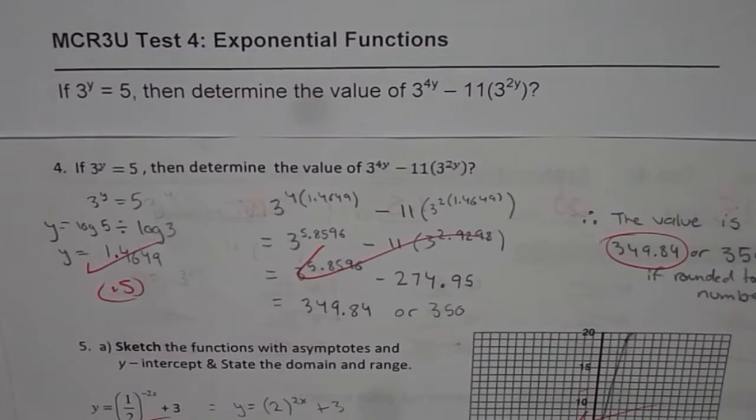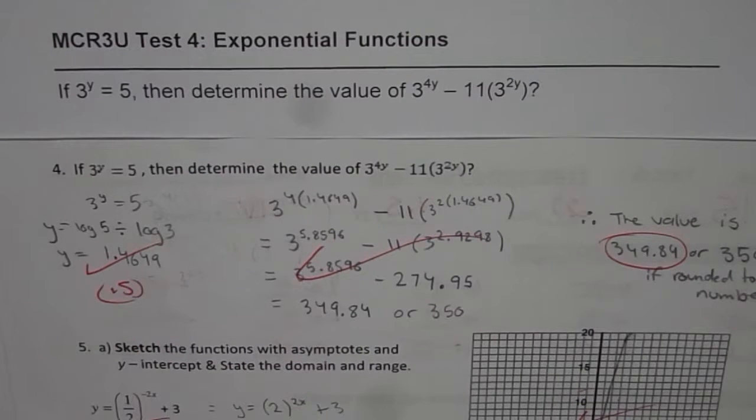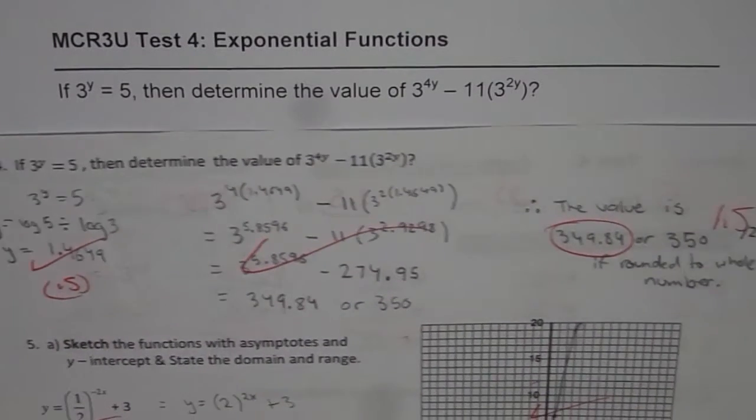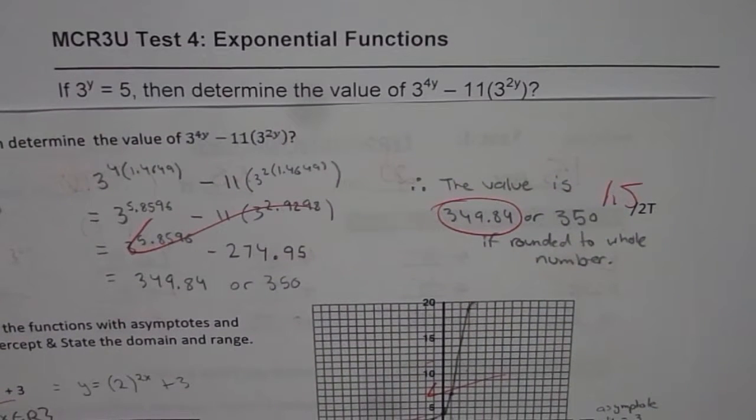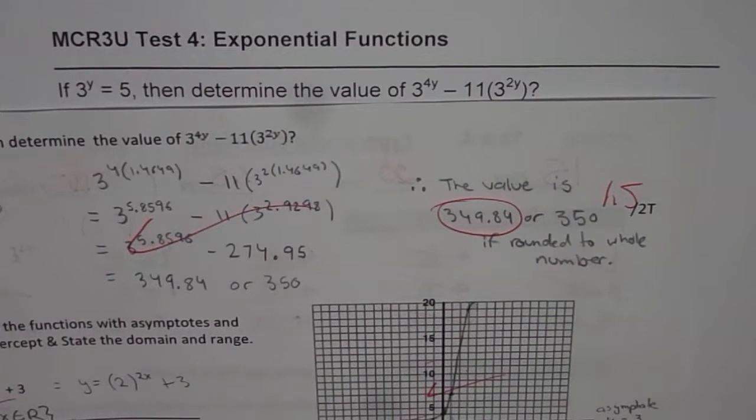Now the student has done using logarithms and this is not a very popular method in his class but he kind of knows it right. So ultimately he lands up with the decimal answer and he also approximates it to write the right answer. It is a thinking question.